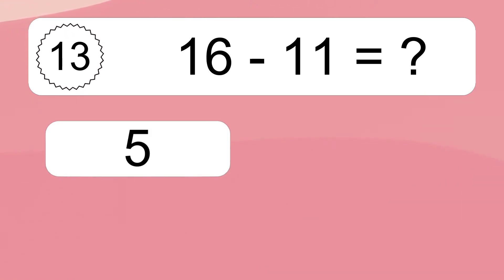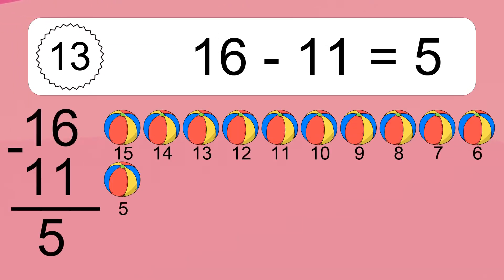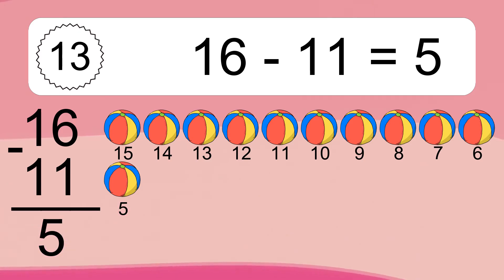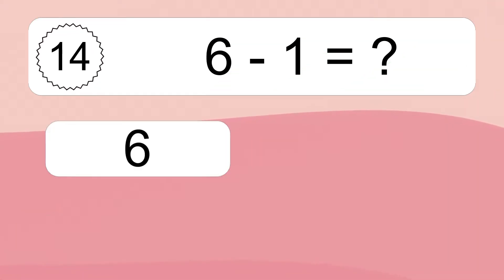16 minus 11 equals 5. Let's count it: 15, 14, 13, 12, 11, 10, 9, 8, 7, 6, 5.